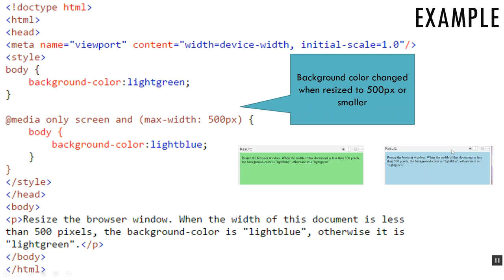Let's look at an example. I've got a page with a body and a paragraph with some text. I have a general style rule for the body that makes the background color light green. Then I've written a media query that applies only for screens with a max width of 500 pixels — in that case, the background color switches to light blue. So if I take this window and keep shrinking it, when it crosses that 500 pixel mark, it will have a light blue background. This is just easy to see visually — it's more practically useful for positioning and widths to accommodate small devices.